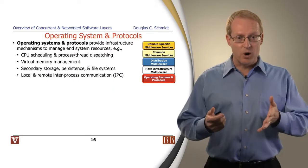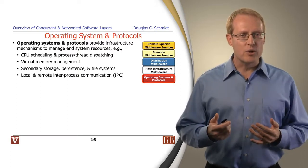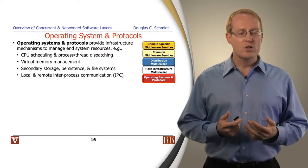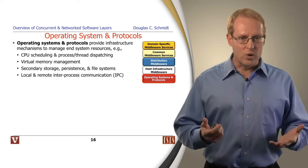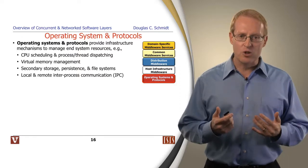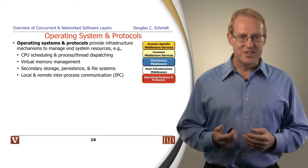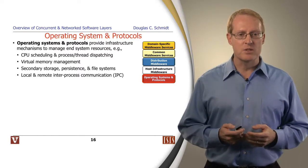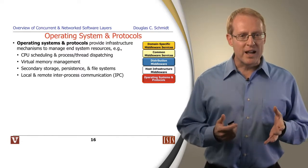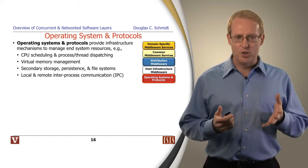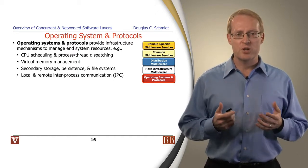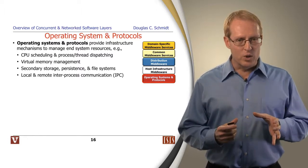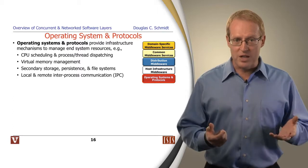What we're going to do in the rest of this part of the module is quickly go through the different layers involved in classic concurrent and network software, so you get a better understanding of what's going on under the hood, as well as the particular layers we're going to focus on in this course. The lowest layer we're interested in here is the layer of operating systems and protocols.